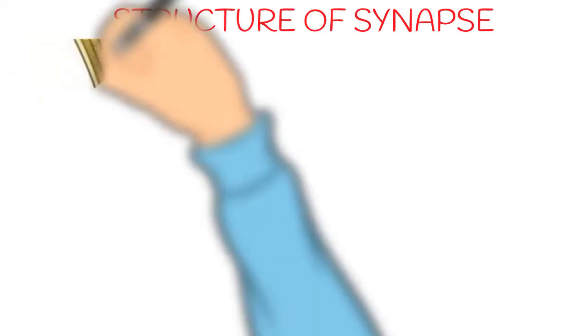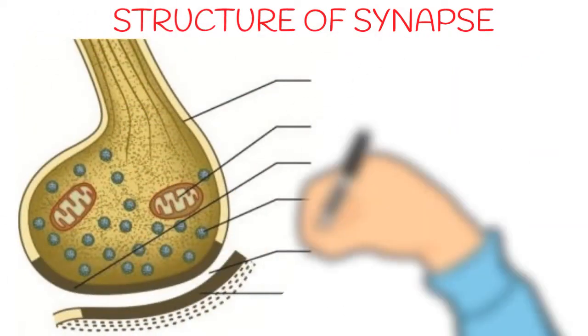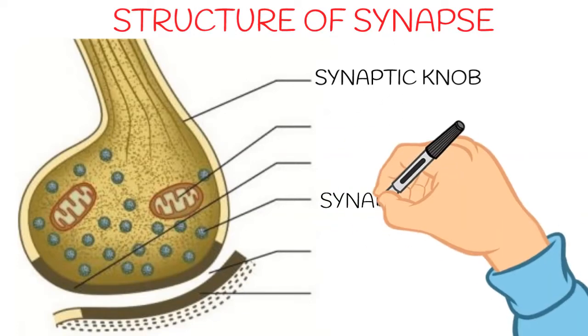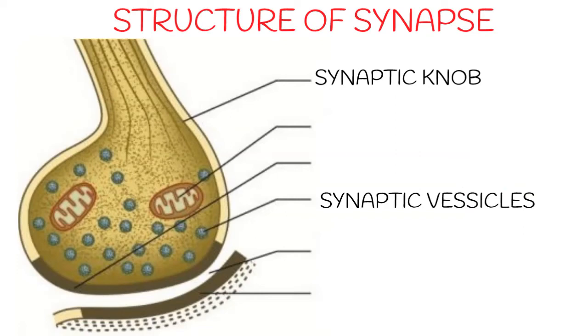Let's see the structure of synapse in a simple way. Here in this diagram, this is the synaptic knob. It is a bulb-like portion of the pre-synaptic axon terminal. It contains synaptic vesicles, you can see here a lot in blue color. What's inside them? Chemicals which are known as neurotransmitters.